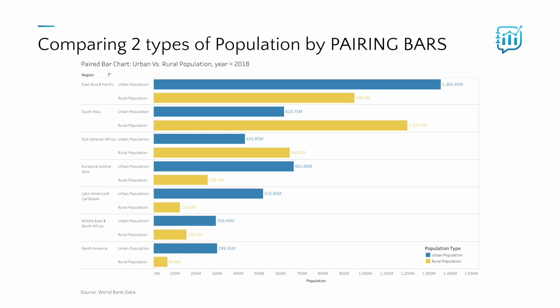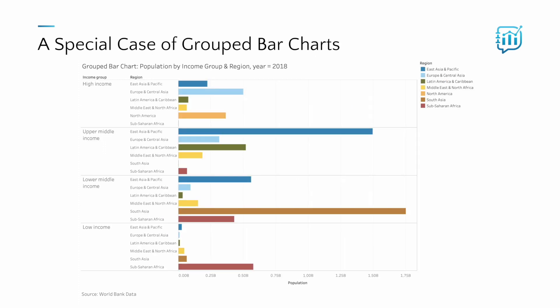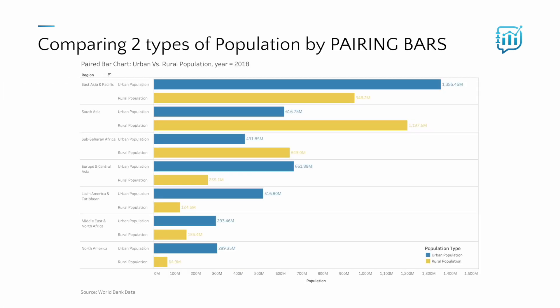The paired bar chart is really just a special case of the grouped bar chart, in which one of the two categorical variables used to group the bars has only two levels. In this grouped bar chart example, bars are grouped first by income group — which has four levels — and then by region, which has seven levels. With our original paired bar chart, there are only two levels of the population type variable — urban and rural — so we get this monogamous relationship between those category levels.